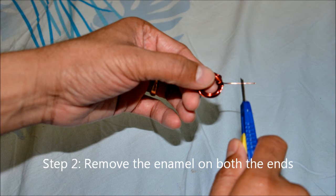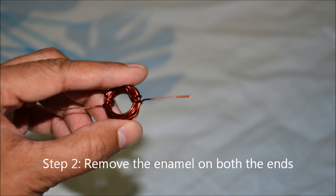Step 2. Remove the enamel on each end of the copper wire using a craft knife.